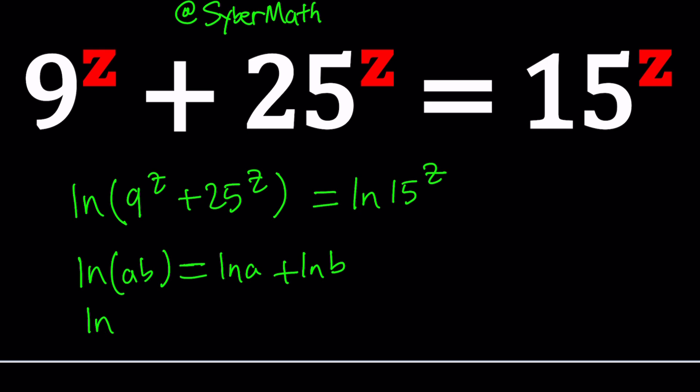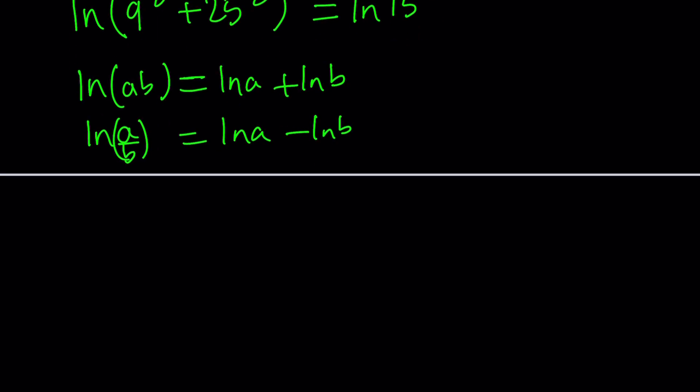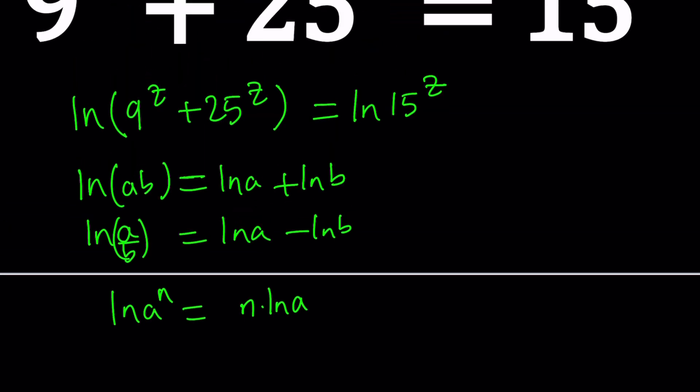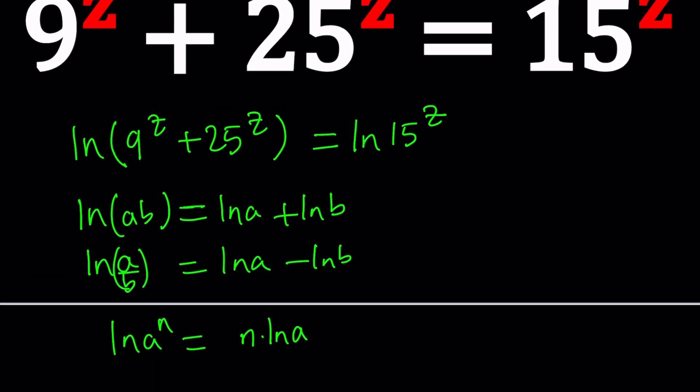And then we have the quotient rule, which turns into difference, and then we have the power rule, which tells us that A, you can move this. This is one of the properties that is used the most, especially in these problems, but there's nothing that turns a sum into something meaningful, right? Even though this is going to simplify, the left-hand side is not going to simplify. Make sense?